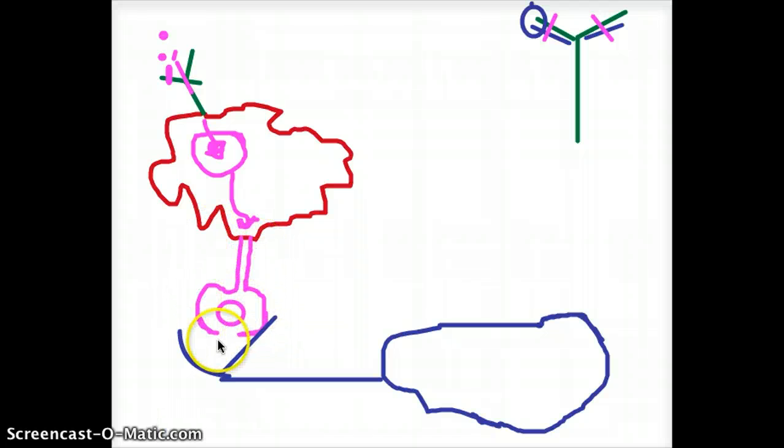It has the T cell receptor sticking out which is going to interact with the MHC class 2 of the macrophage. The MHC class 2 is now going to present the antigen, the digested antigen, onto the T cell receptor of the T cells. Once it's been presented to the T cell receptor, the T cell is activated.